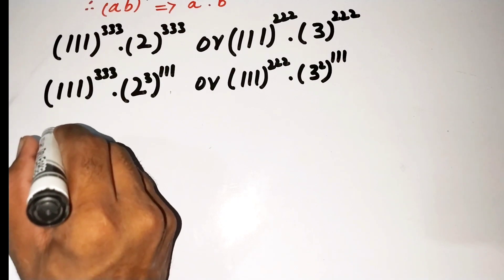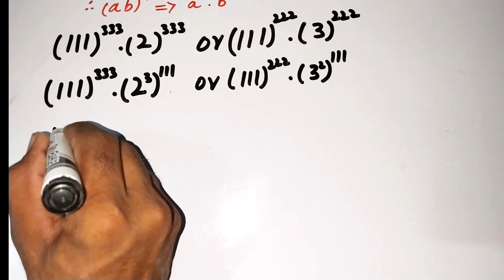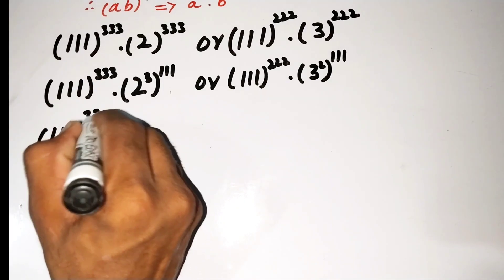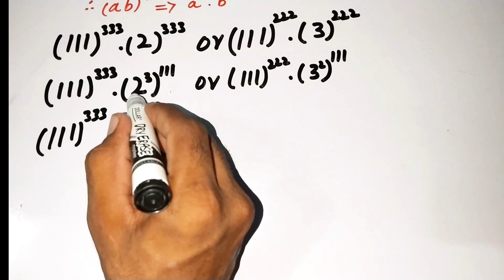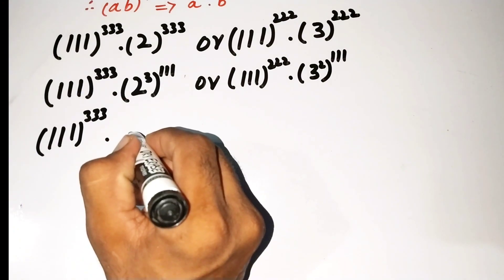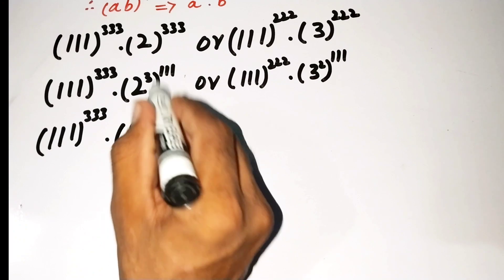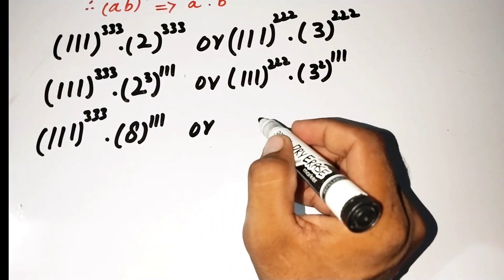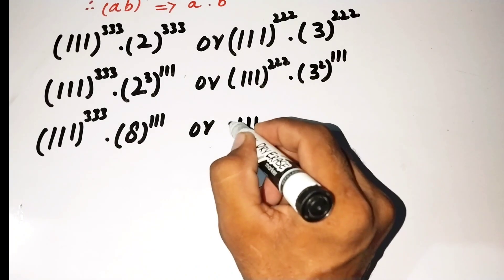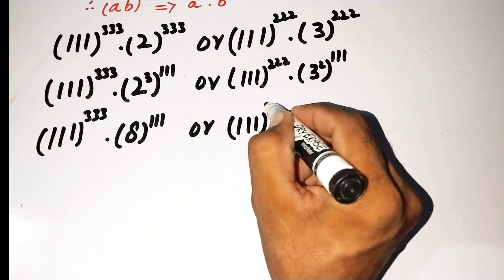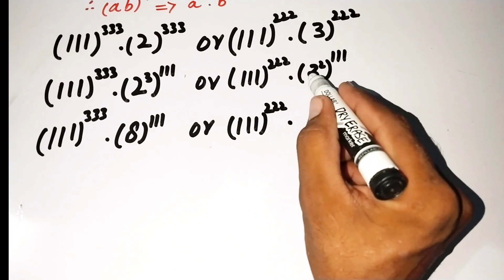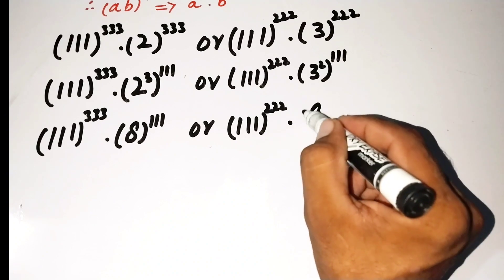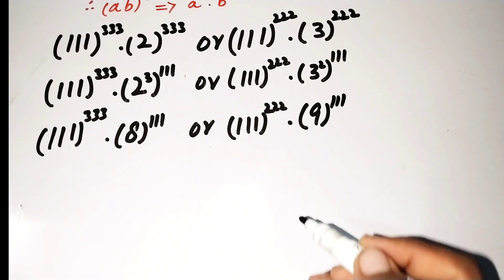In the next step we can write the left side as 111^333 times 2^3, which can be written with 8, and on the other side 111^222 times 3^2, which equals 9. So the right side becomes 111^222 times 9^111.